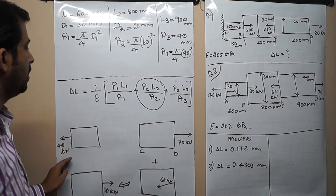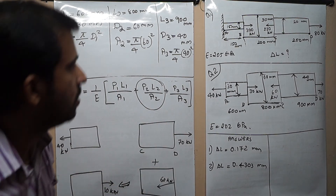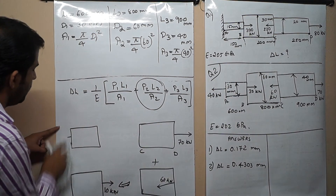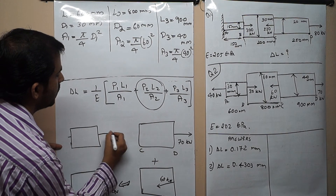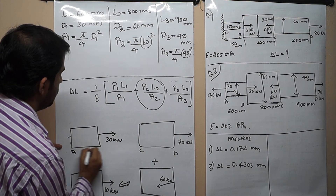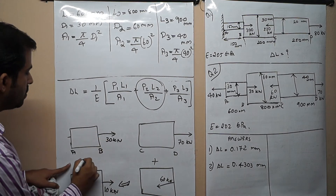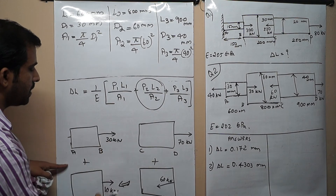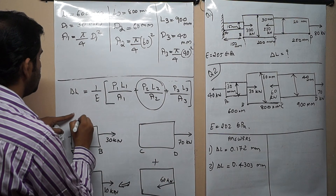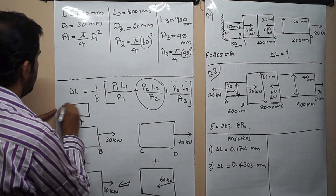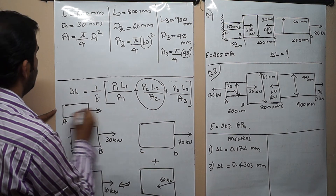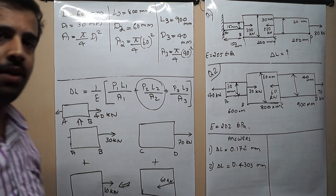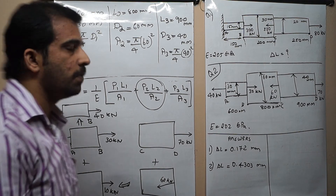We can write 40 kN as it is. You can also verify: 30 kN is acting outwards from section AB, and adding section BC gives 30 plus 10 equals 40 kN outward. This implies that in section AB, a load of 40 kN will be acting outwards. That is how we take the loads for each section.